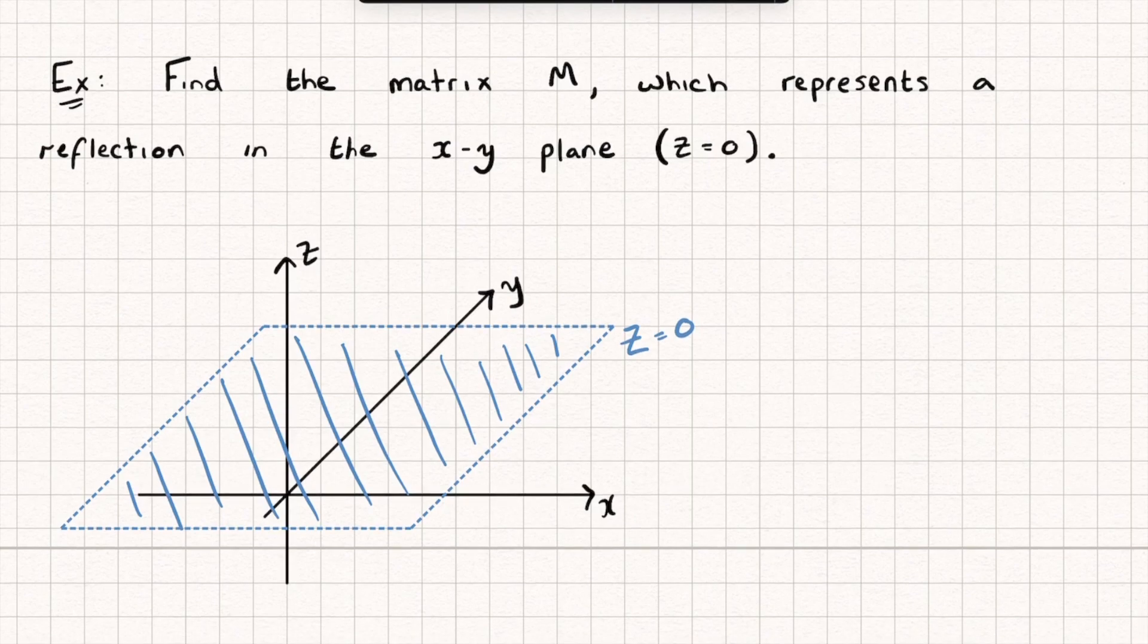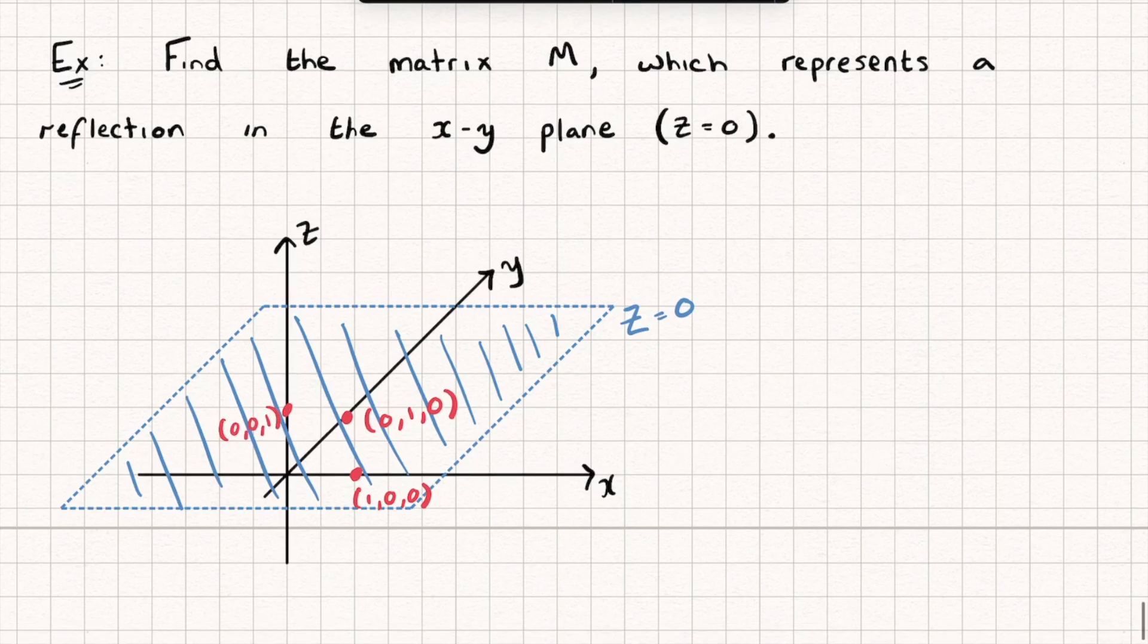Let me plot on those points. I'll put on the point (1,0,0), so that's here. I'll put on the point (0,1,0) which is here. And finally I'll put on the point (0,0,1) which is here. So we're reflecting in Z equals zero which is the XY plane. Hopefully you can kind of visualize this from my sketch.